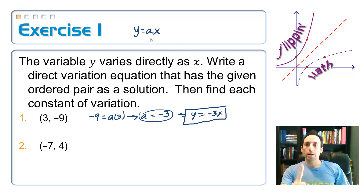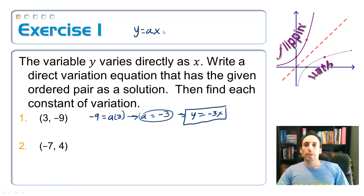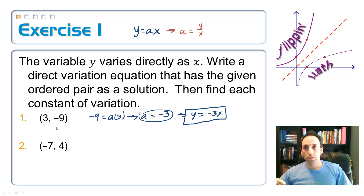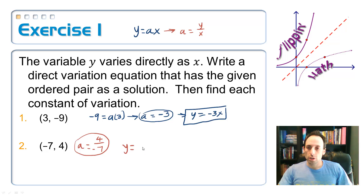Let me rewrite this — solving y = ax for a we get a = y/x. So looking back at number one: divide y-coordinate −9 by x-coordinate 3 to get a = −3. I can go straight to that on number two: y-value is 4, x is −7, so a = 4/−7 = −4/7. The direct variation equation is y = −(4/7)x.